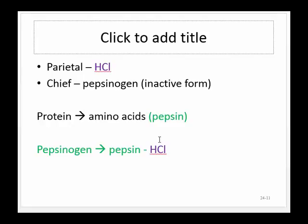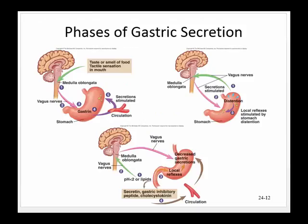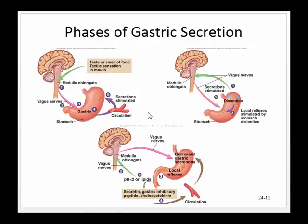Every time our body makes gastric secretions, it's basically to prepare the body for digestion. Just tasting food, smelling food, or having food in the mouth signals the brain to start stimulating the digestive system and produce different types of secretions. When the stomach becomes distended as food enters, that also stimulates different secretions. Once the stomach starts emptying, inhibitory reflexes will turn off some of those responses.